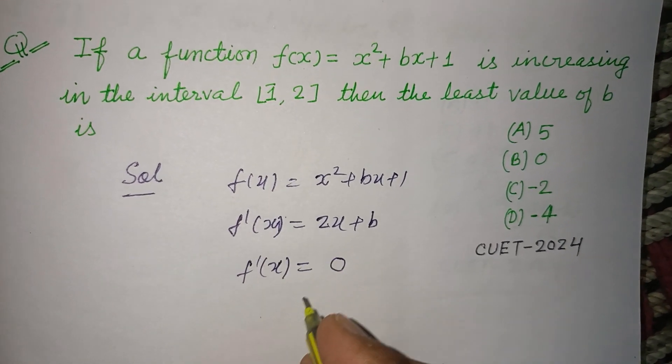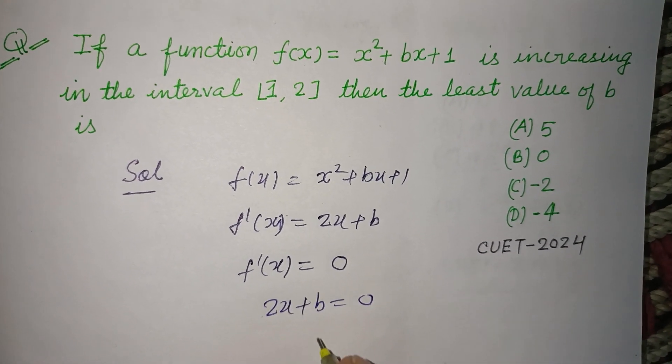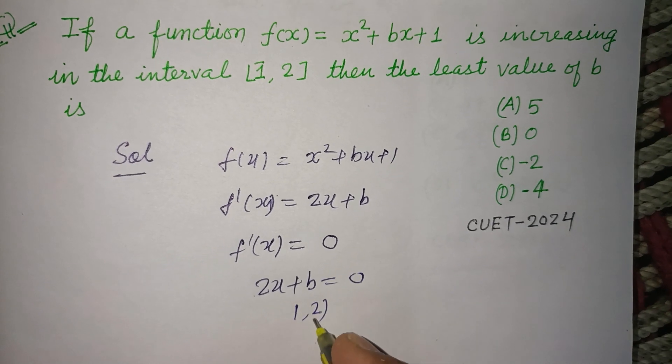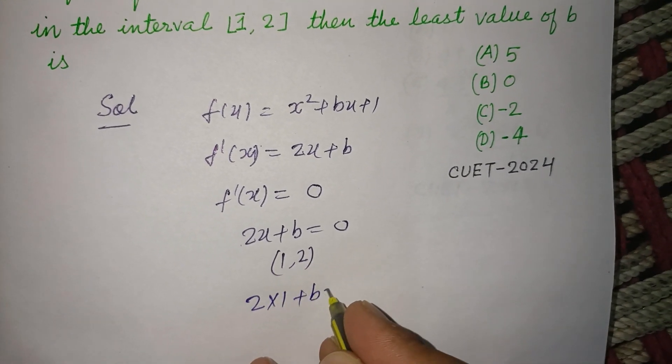So putting the value, 2x + b = 0. Putting this value satisfying this with the interval [1, 2], so 2 × 1 + b = 0.